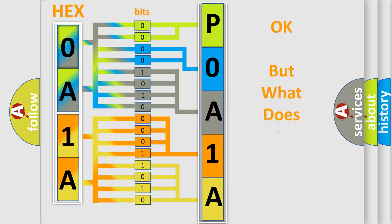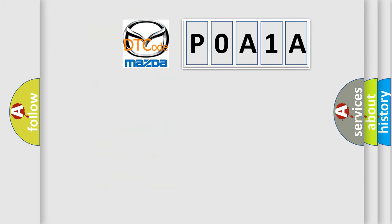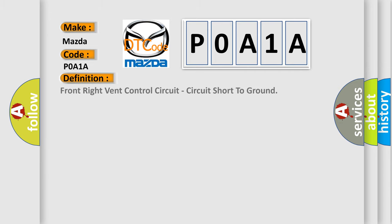We now know in what way the diagnostic tool translates the received information into a more comprehensible format. The number itself does not make sense to us if we cannot assign information about what it actually expresses. So, what does the diagnostic trouble code POA1A interpret specifically for Mazda car manufacturers?